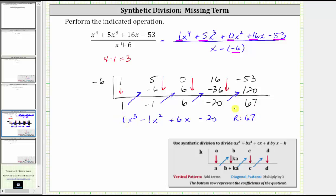And there are two common ways to express our final answer. The most common way is to write the quotient as x cubed minus x squared plus six x minus 20, and then because the remainder is 67, we write plus 67 over the divisor of x plus six.